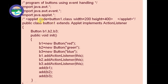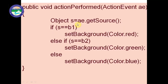We also write 'import java.awt' because this is an AWT program and the Button class comes under AWT. We write 'import java.awt.event' because ActionListener comes under the event package. And we write 'import java.applet' because we are using an applet here.